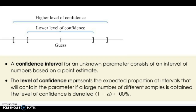In statistics, we gather a sample of data and then use the information from that sample to make estimations about the entire population. For example, if we wanted to guess the average weight of Americans, it would be impossible to weigh every single American and find the true average. Instead, we could get a sample of Americans, weigh that sample, and then make an educated guess about the entire country.